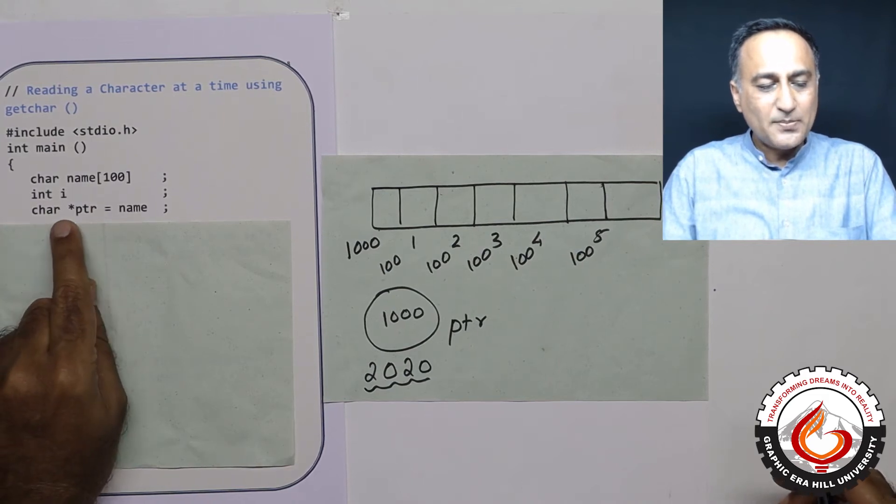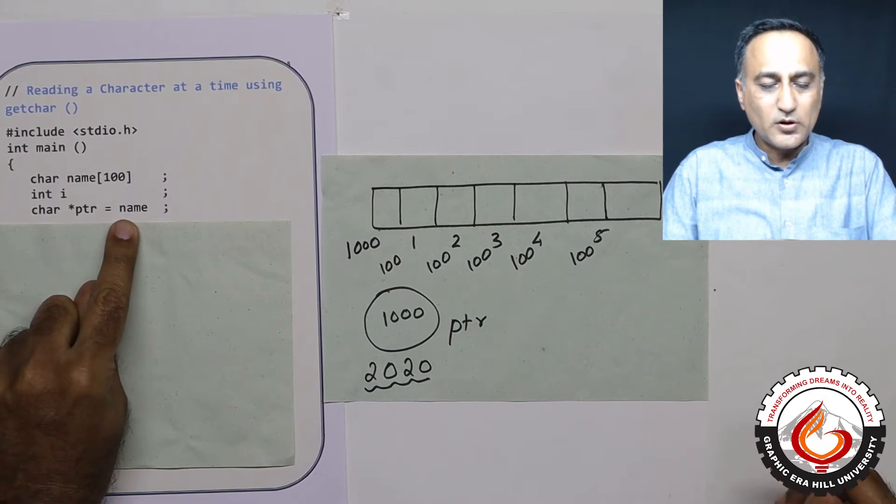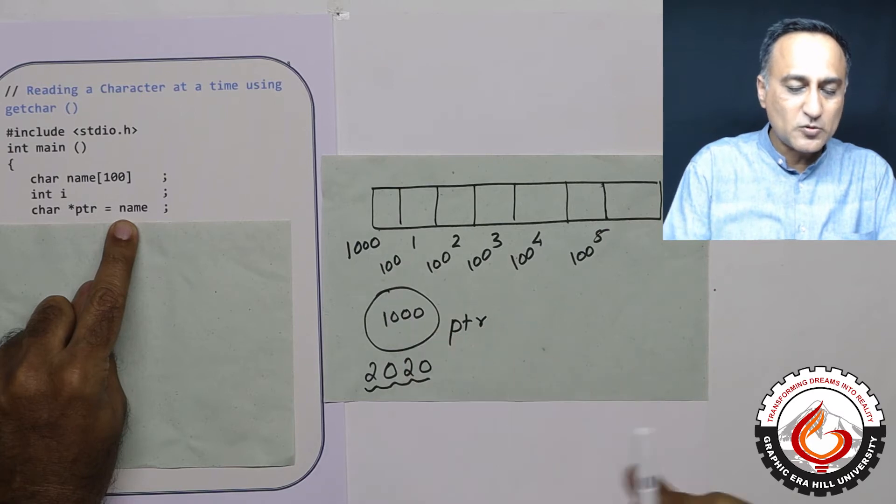Now what I have done is I have defined a pointer to a character type of data. So I have given PTR equals name. So PTR contains the address of the 0th location of the array, which happens to be 1000.